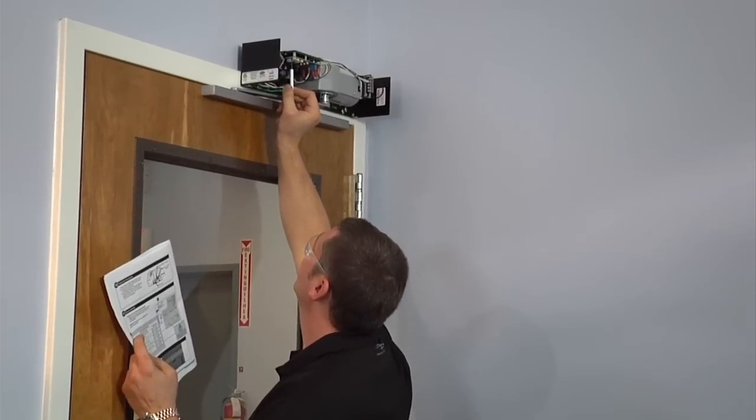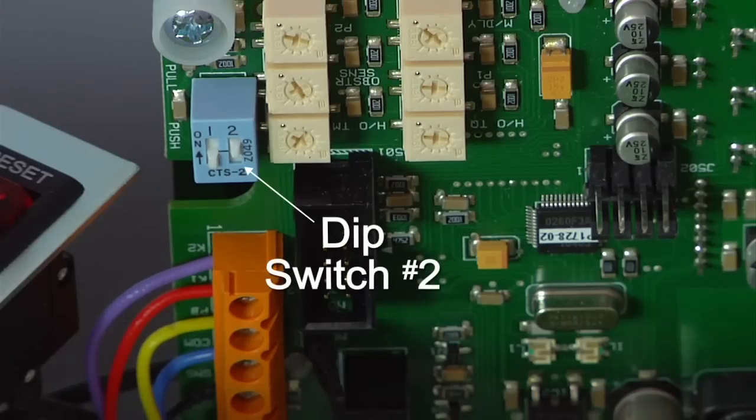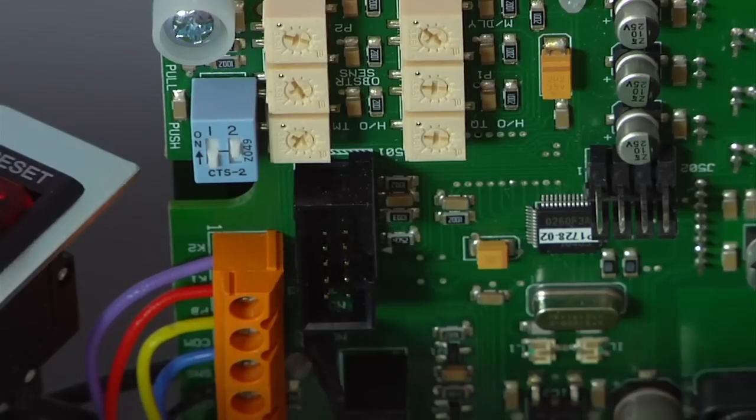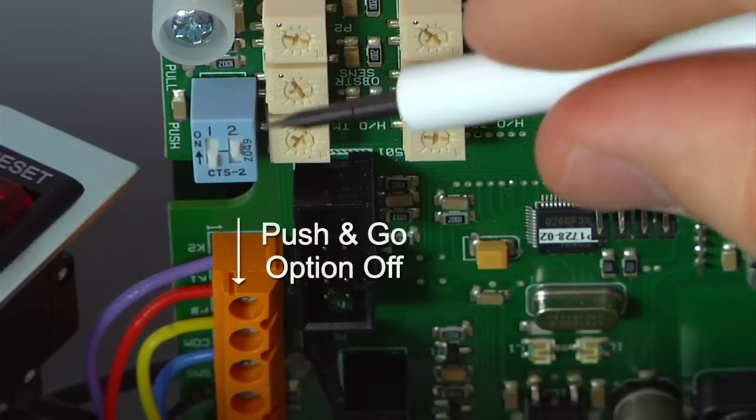Dip switch number two on the right configures the push and go option. If desired, set the right dip switch up to the on position. Move the switch down to deactivate the push and go option.